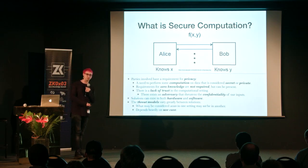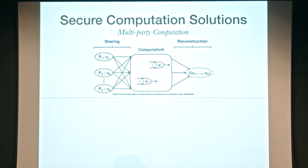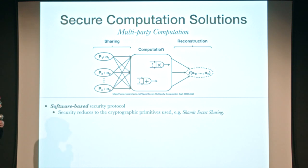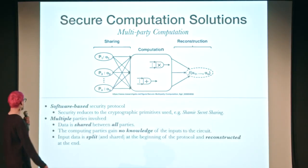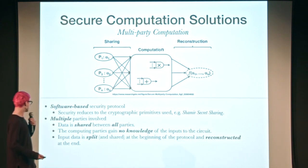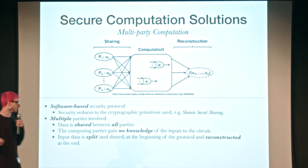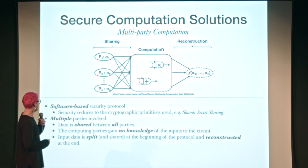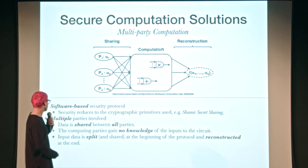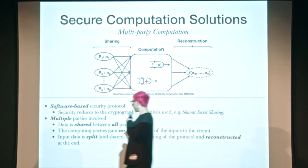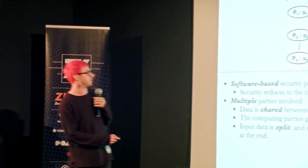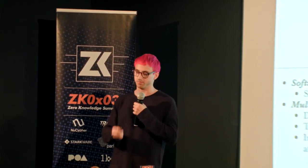Multi-party computation can be considered a software-based security protocol. The security reduces to cryptographic primitive use — in many cases, people use Shamir secret sharing — and we can reduce security to the mathematical properties involved. Multiple parties perform a computation, and the computing parties gain no knowledge of the inputs to a specific circuit. The input data is split and shared across all computing parties; at the end it's reconstructed, and this is the only point when any data is actually leaked.